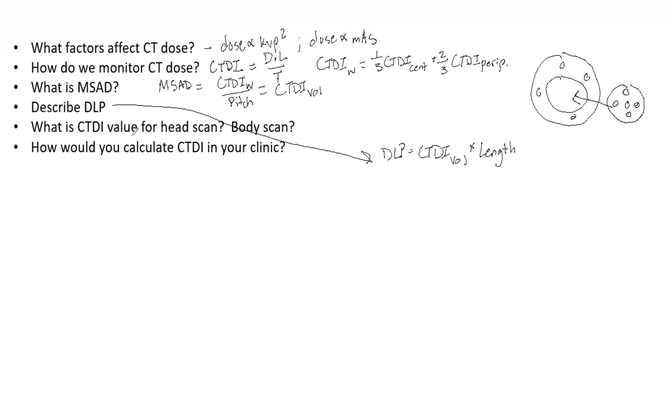So what is the CTDI value for a head scan and a body scan? This is important. They give you and the examiner a sense that you have some general idea of what these values are, and that shows that you have done this clinically, that you understand it. And it's not like you're saying, oh yeah, that one CT is going to give you two gray of dose. That would be nuts. So the head, that is 80 milligray. Notice we said milligray here. And then a body is 30 milligray.